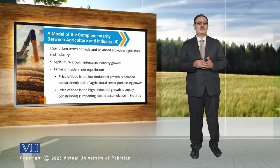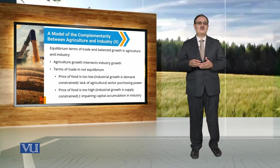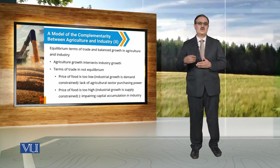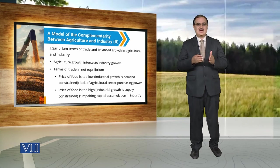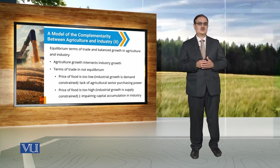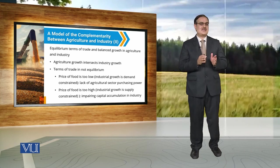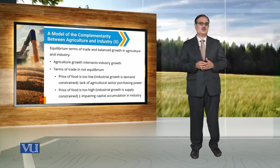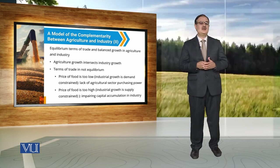If terms of trade are not in equilibrium, it is possible that prices of food are too low. When prices of food are too low, it results in a demand constraint on industrial growth, because the agricultural sector lacks the purchasing power to buy industrial goods.